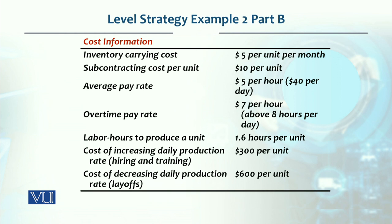Cost information is provided here. Inventory carrying cost is $5 per unit per month. But because we will not maintain inventory, we will be subcontracting, which is $5 per hour, which is $40 per day per worker. We will see how many workers there are. For example, if we have 8 workers, these 8 workers multiply to give us the cost. So total, there will be this cost as our total cost. Overtime we will not pay. Labor hours to produce is 1.6 hours per unit.